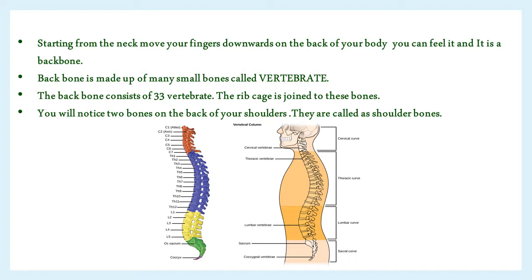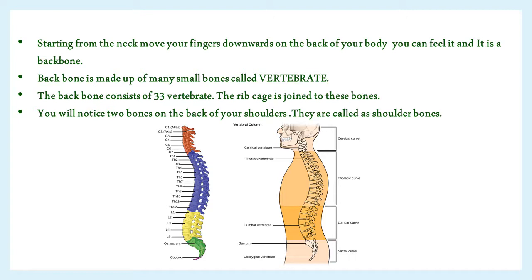Make your friend stand with both hands pressed to the wall and ask her to push the wall. You will notice two bones on the back of the shoulders — these are called shoulder bones. The skull is made up of many bones joined together and it protects a very important part of the body: the brain. We have now discussed many bones and joints of our skeleton.